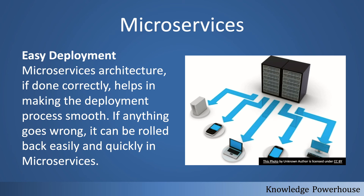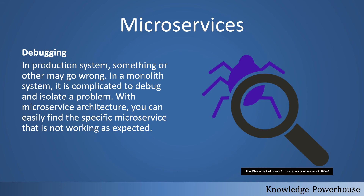Easy deployment is another benefit. Time to market is an important concept — we want features to reach production faster. With microservices, a smaller set of services can be deployed smoothly and quickly to production. If anything goes wrong, you can roll back just that microservice. In contrast, with a monolith you have to extensively plan a large release, making for a much longer planning cycle. With microservices, teams can deliver features to production even daily.